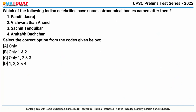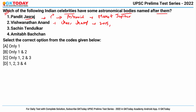Question number two: which of the following Indian celebrities have astronomical bodies named after them? First is Pandit Jasraj — he is the first Indian maestro to have a minor planet named after him, an asteroid located between the orbits of Mars and Jupiter. Second is Viswanathan Anand, the chess champion — in 2015, an asteroid between Mars and Jupiter was named after him with the code 4538 Vishyanand. Third is Sachin Tendulkar and fourth is Amitabh Bachchan — no astronomical bodies are named after either. The correct answer is only one and two.